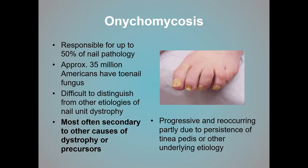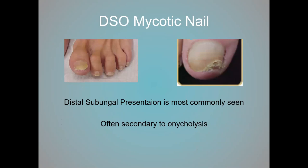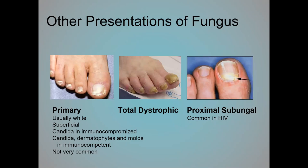If someone has a fungal problem in the skin, it's very difficult to resolve the nail fungus until the skin is also addressed. Mycotic nails most commonly present with a distal subungual presentation — starting distally, usually secondary to onycholysis. You can also see fungus that starts proximally, usually found in people with HIV. There's also primary superficial fungus that is often white and very superficial. And when the nail is completely embedded with fungus throughout the nail and nail bed, it's called total dystrophic nail fungus.